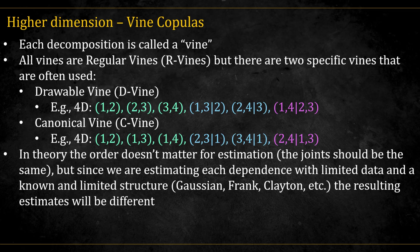All vines are regular vines, or R vines. But there are also two specific vines that have their own names. The drawable vine, or the D vine, is the vine that has the following chain-like structure: 1, 2, then 2, 3, etc.